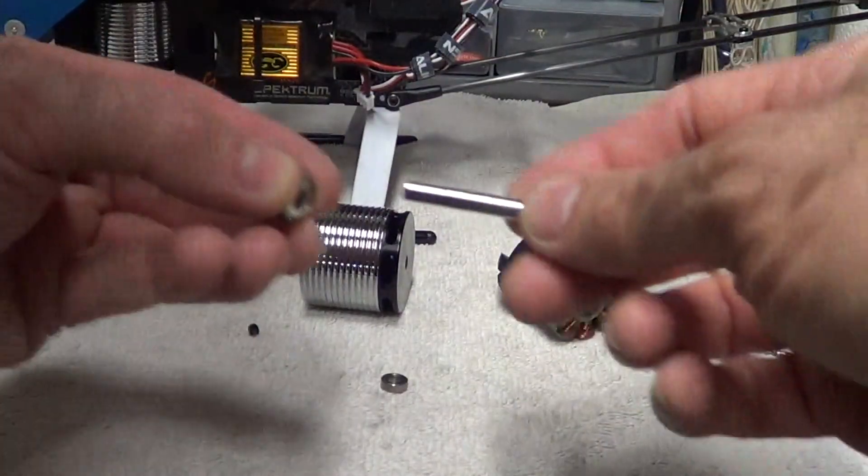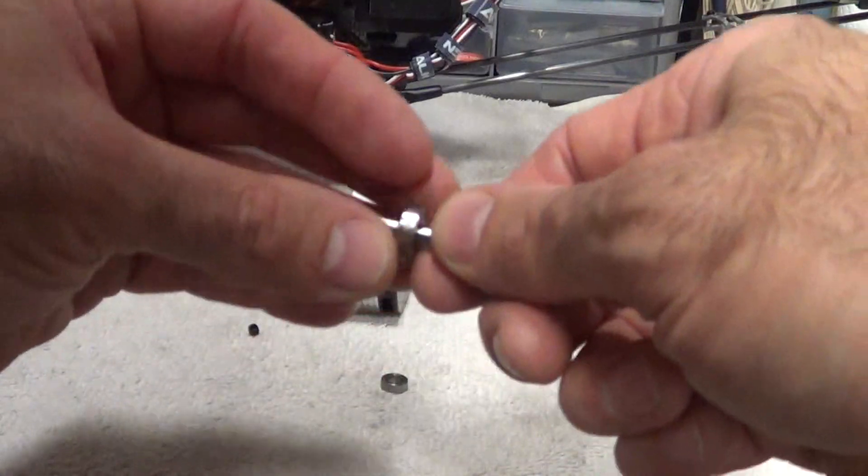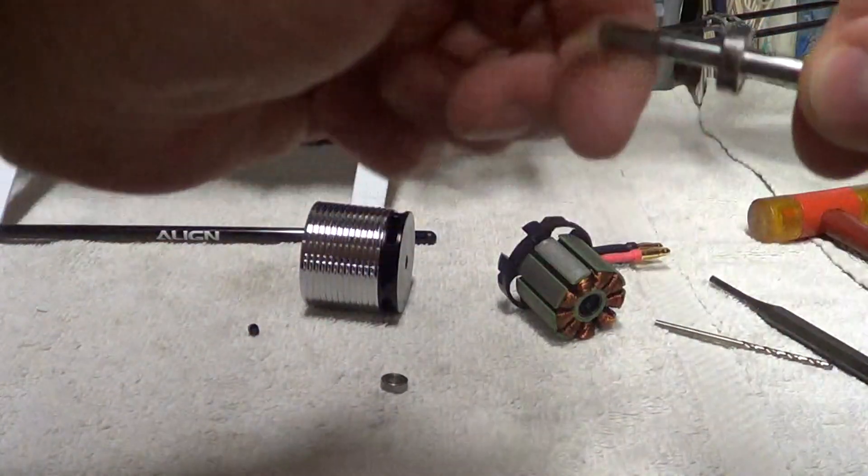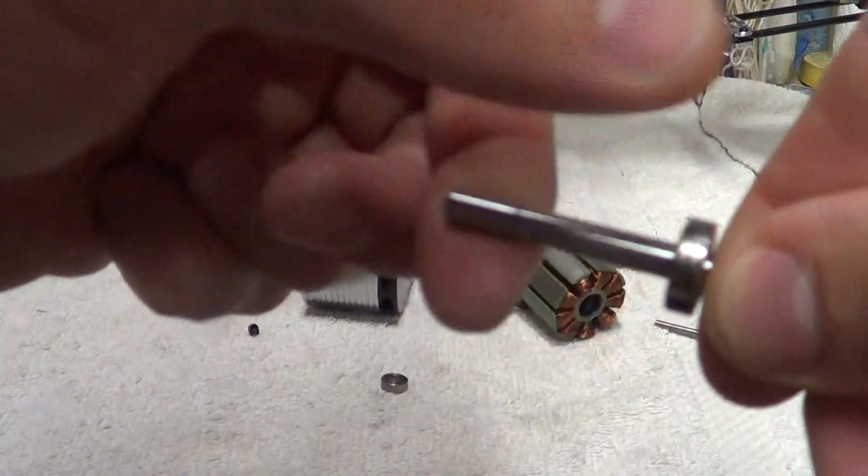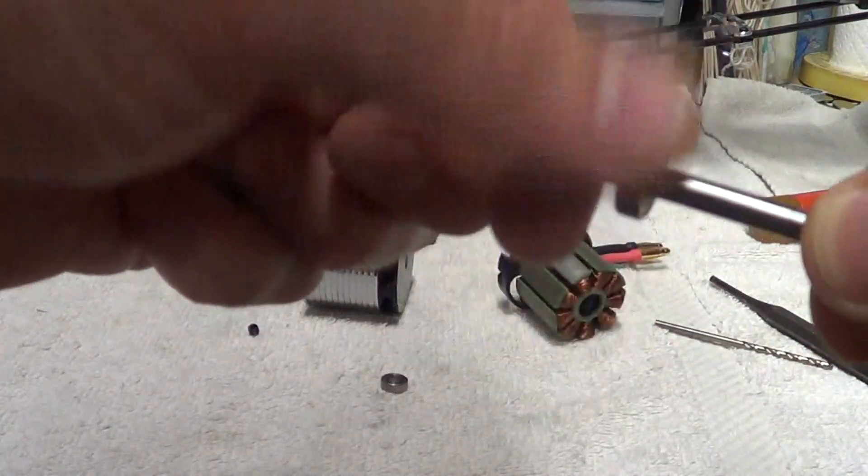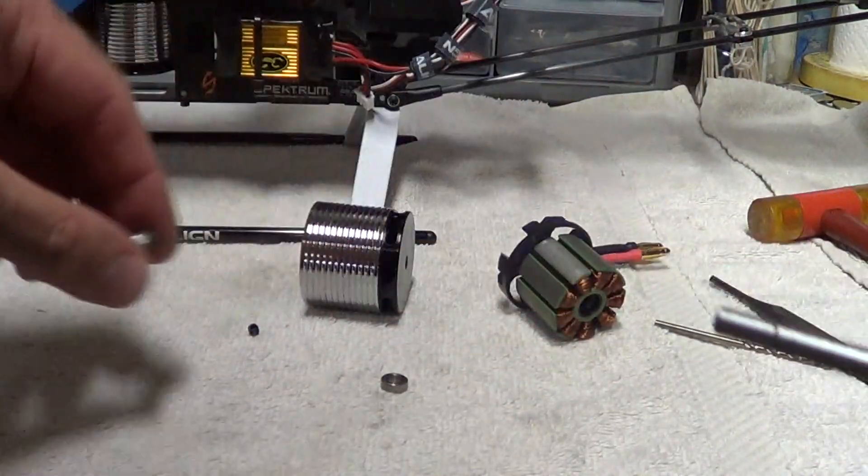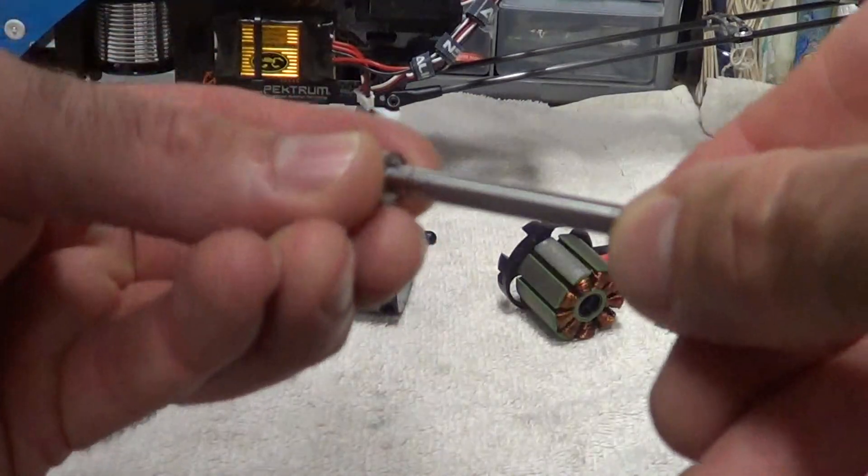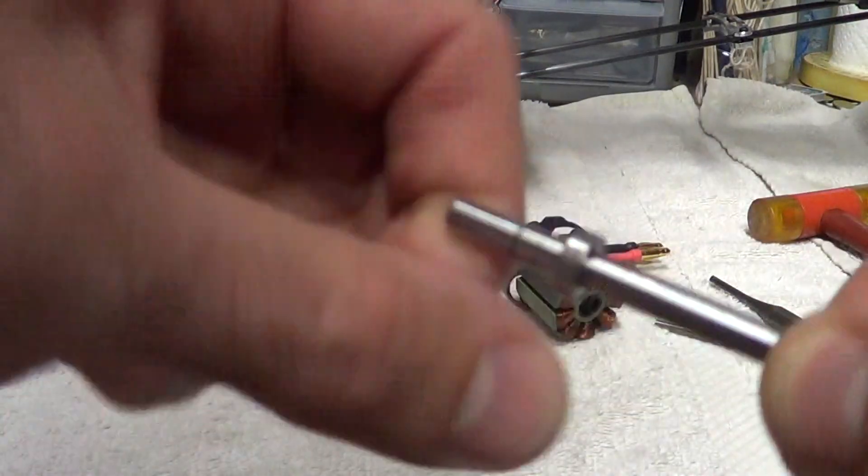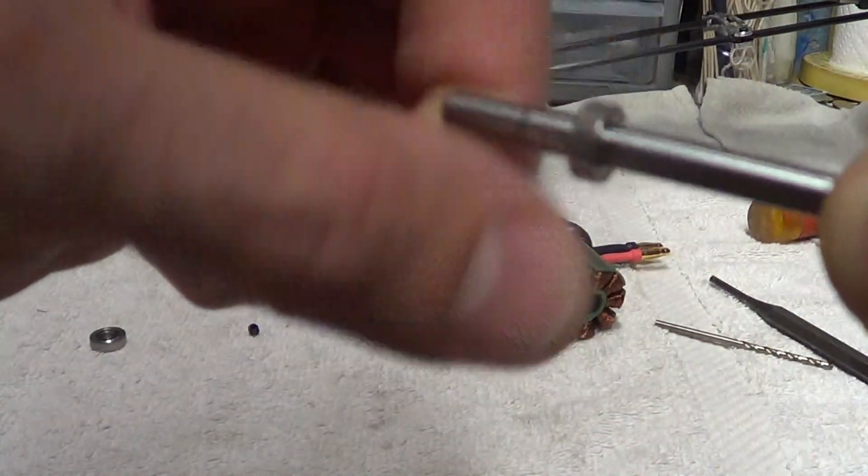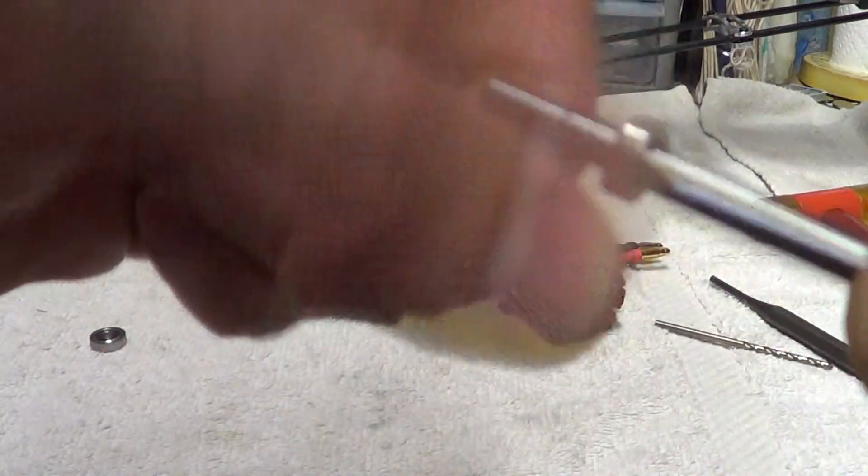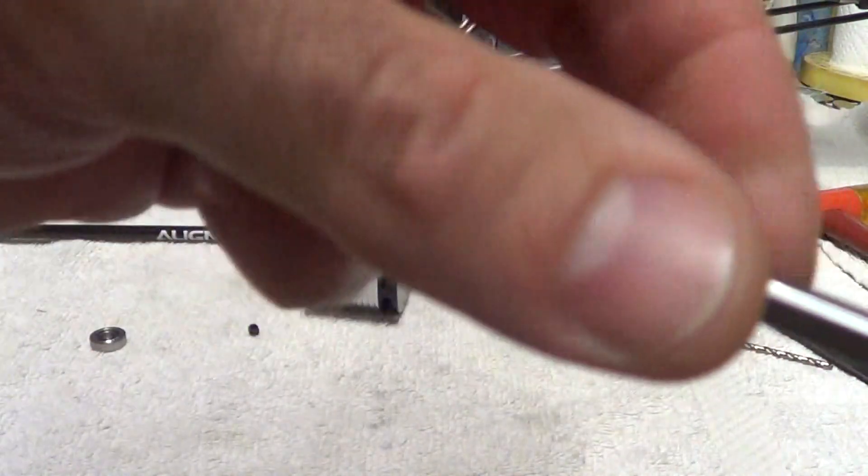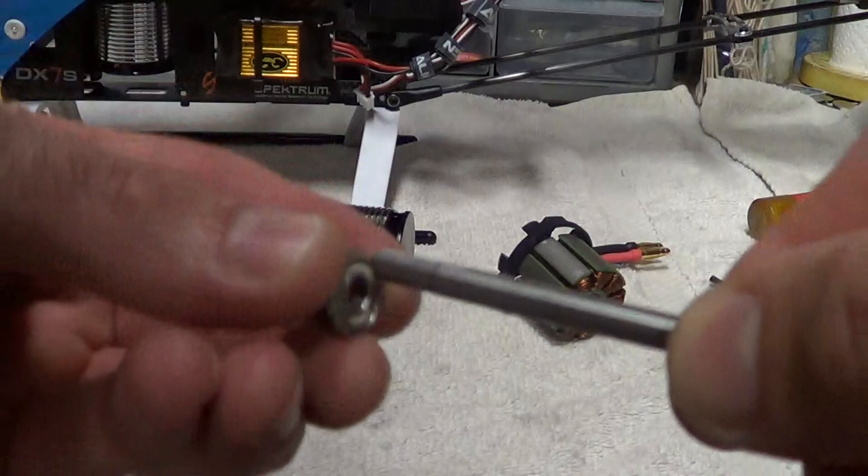Now this bearing, if you put the bearings on the shaft like this and you spin them. This bearing is still good. If I put this bearing on the shaft and spin it, you might be picking that up from the camera. But if you can hear the difference. Hear that? The noise it's making, the grinding. And you go back to this one. Smooth.